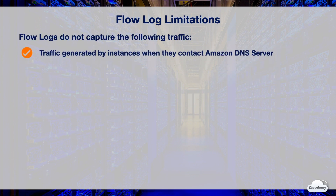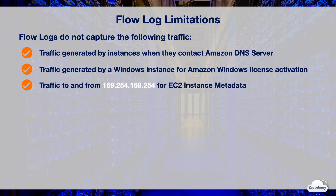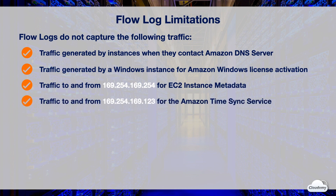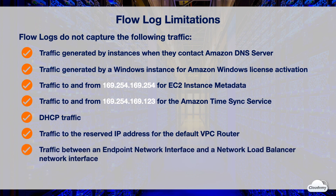Flow logs do not capture all IP traffic. Traffic generated by instances when contacting the Amazon DNS server is not captured, but traffic to a customer DNS server is captured. Traffic generated by a Windows instance for Amazon Windows license activation is not captured. Traffic to and from 169.254.169.254 for EC2 instance metadata is not captured. Traffic to and from 169.254.169.123 for the Amazon TimeSync service is not captured. Any DHCP traffic is not captured. Traffic to the reserved IP address for the default VPC router is not captured. Traffic between an endpoint network interface and a network load balancer network interface is not captured.